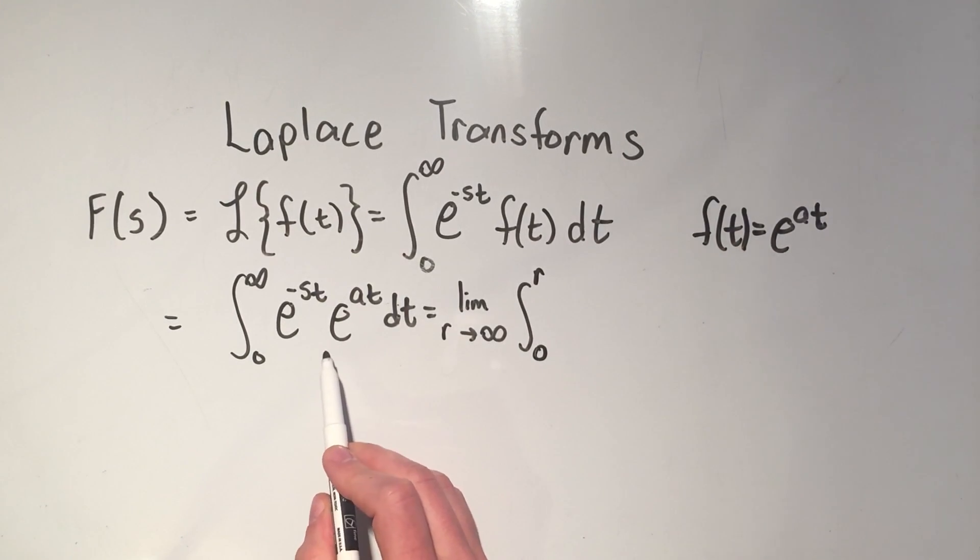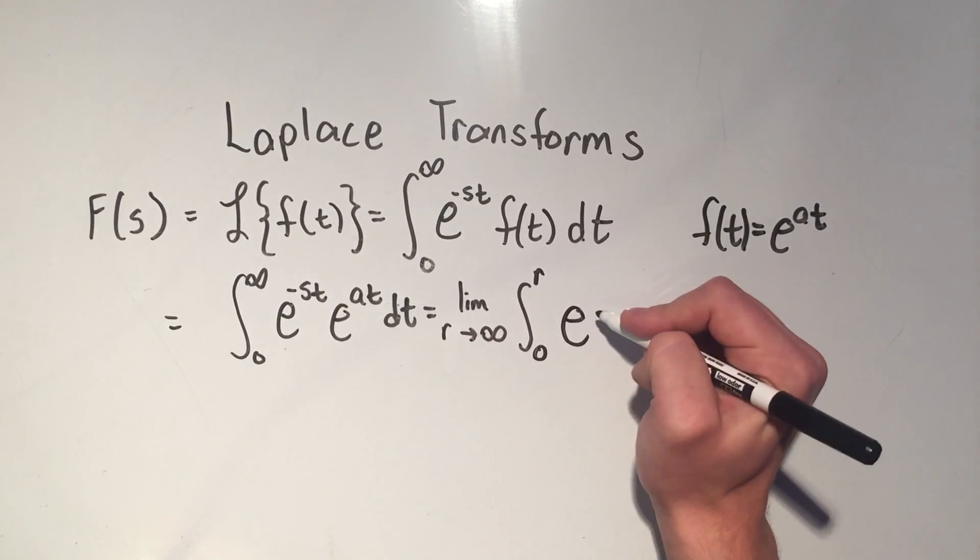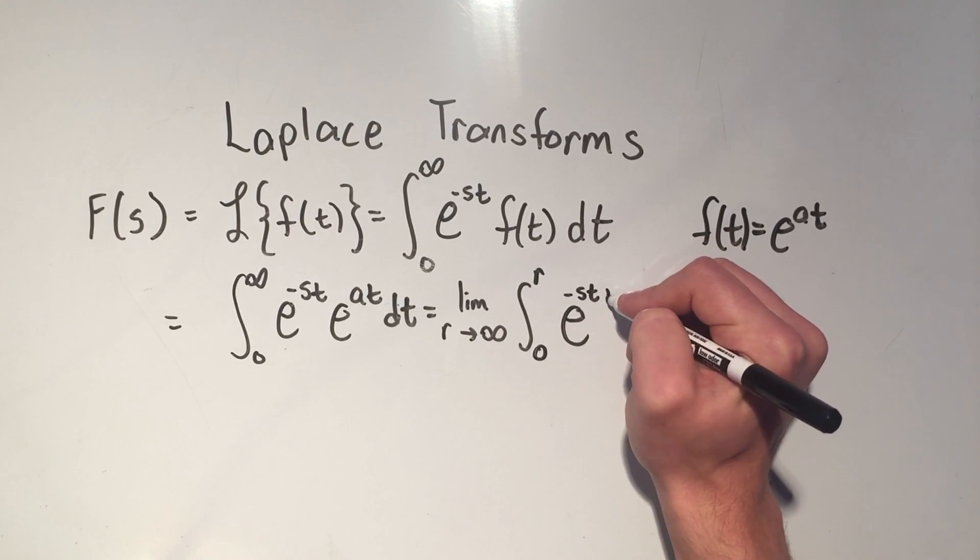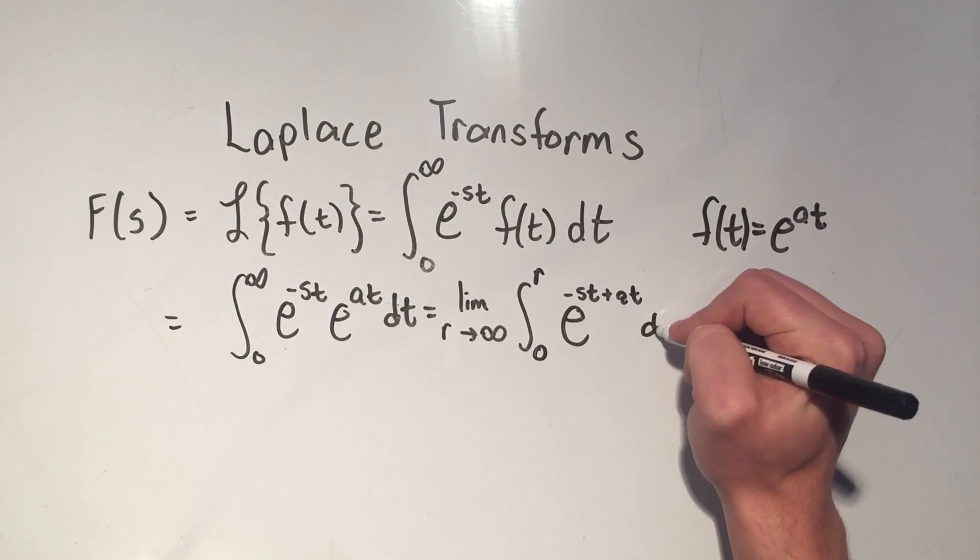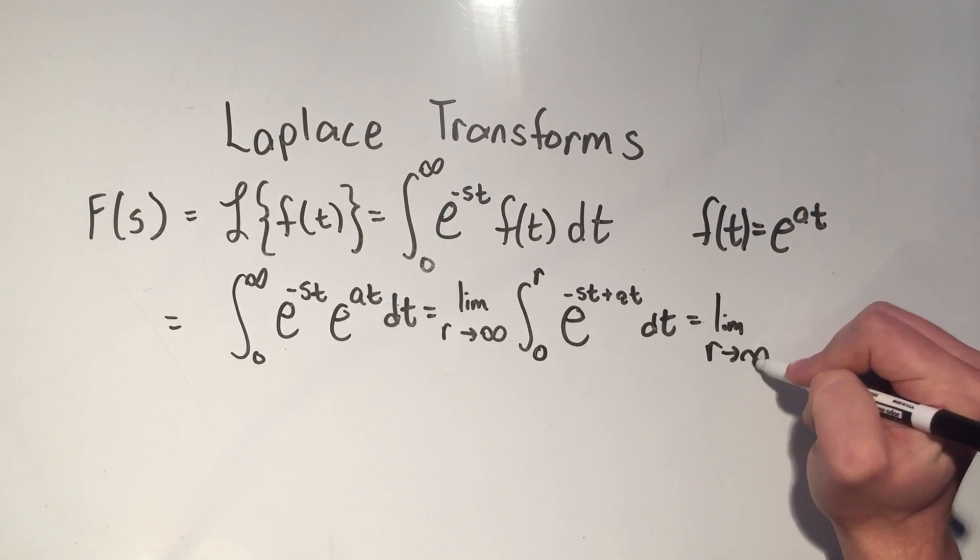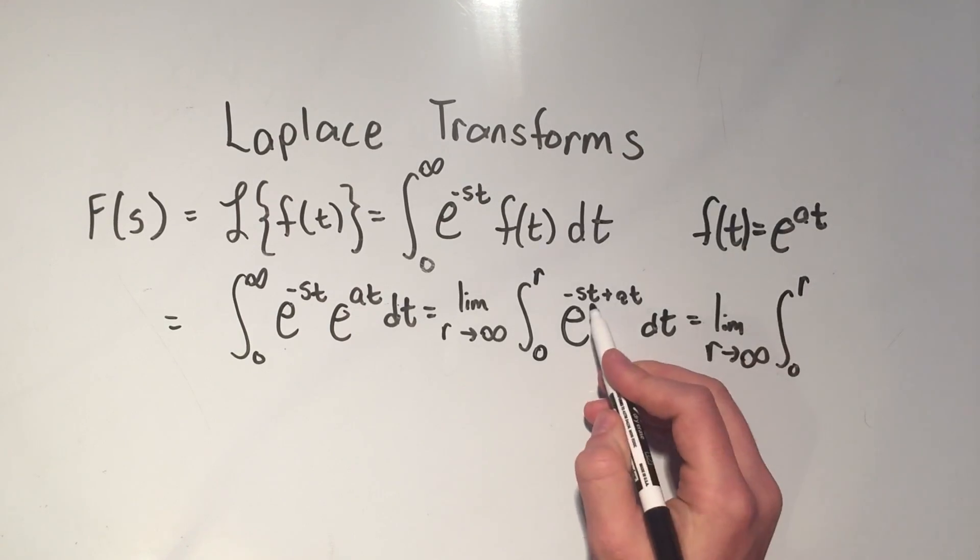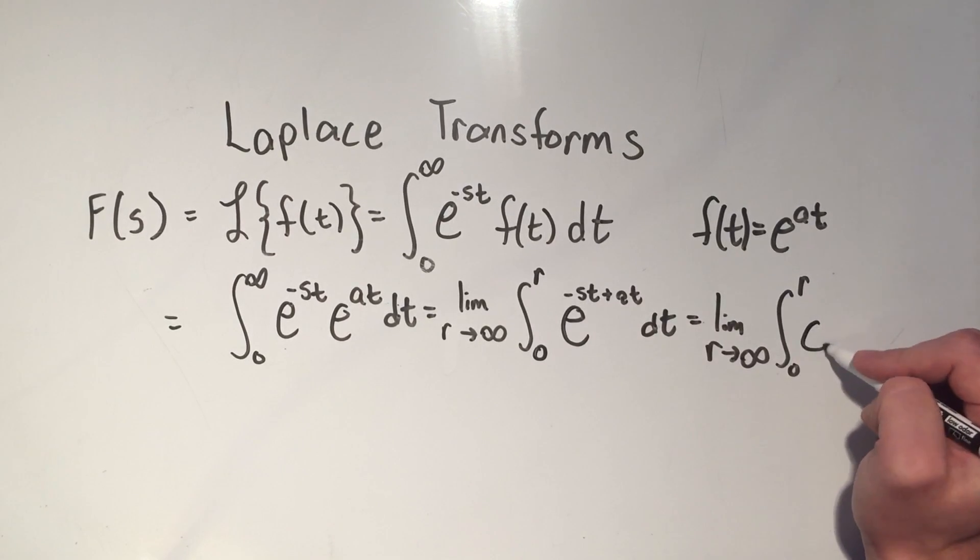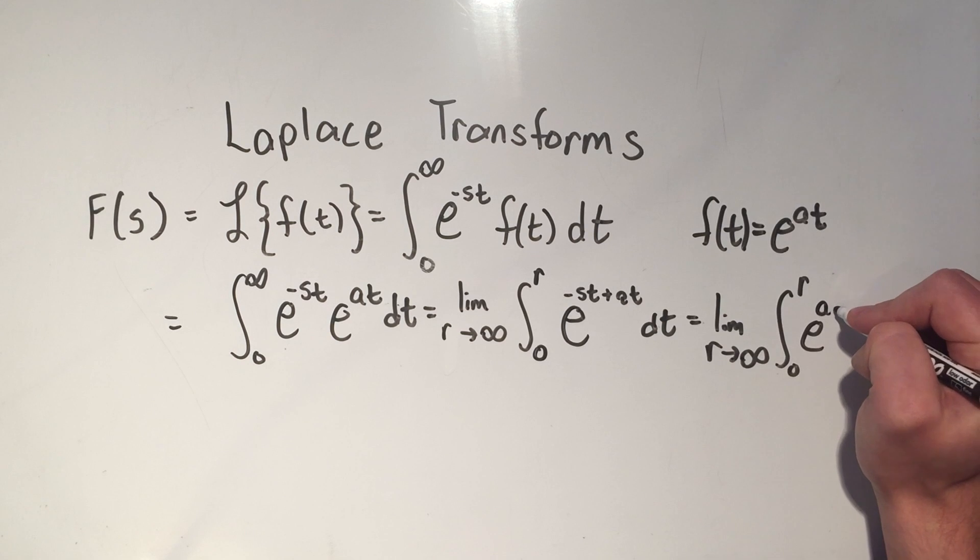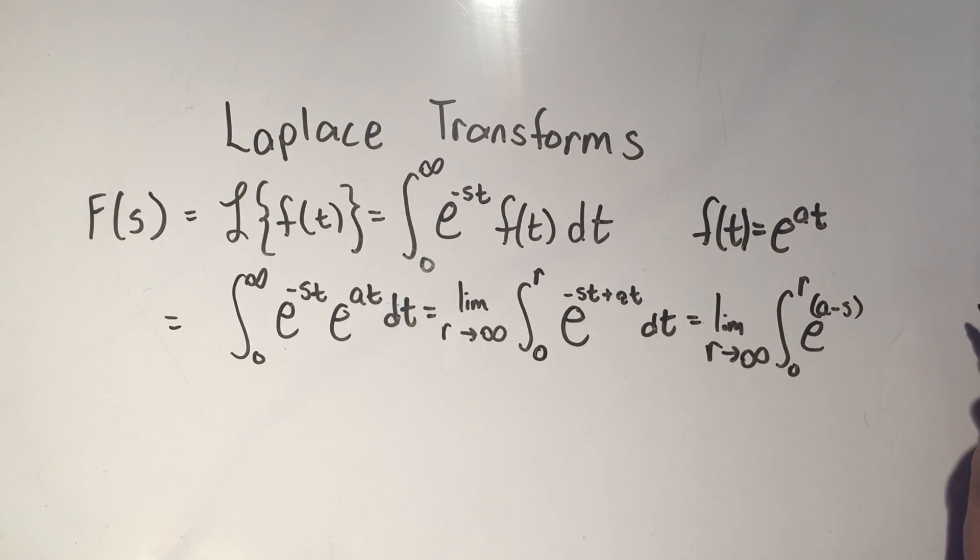Now how am I going to do this? I think I'm going to take advantage of properties of exponents. If I'm multiplying like bases, then I add the exponents. So that's minus st plus at in the exponent of e. And I'm even going to do one more thing to make it look a little nicer. I'm going to factor out this t in the exponent, and then I'm going to write it like a minus s. That looks a little nicer to me. So that's a minus s times t dt.